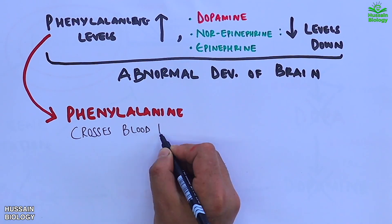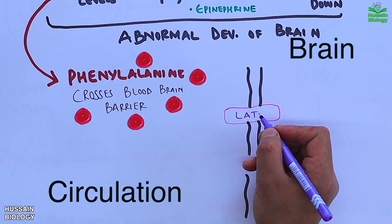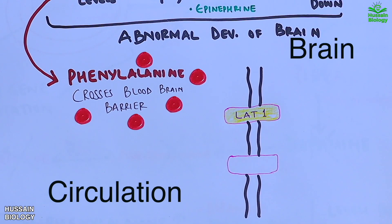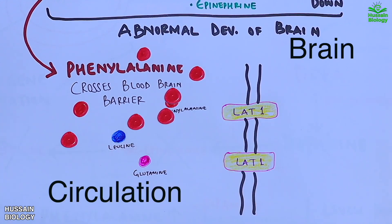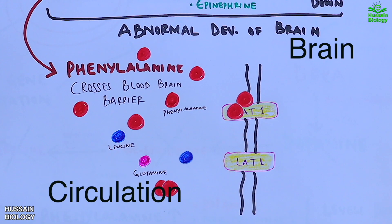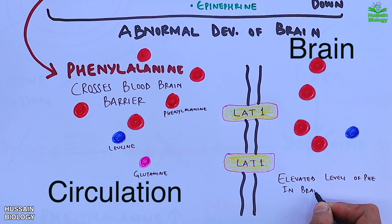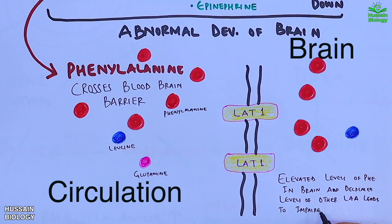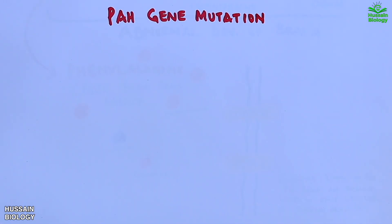Elevated phenylalanine in blood can cross the blood-brain barrier since it utilizes the L-type amino acid transporter LAT1, which other amino acids like leucine and glutamine also use. When phenylalanine levels are elevated in blood, it competes with other amino acids to cross the blood-brain barrier, resulting in increased levels of phenylalanine in the brain, which eventually damages it.